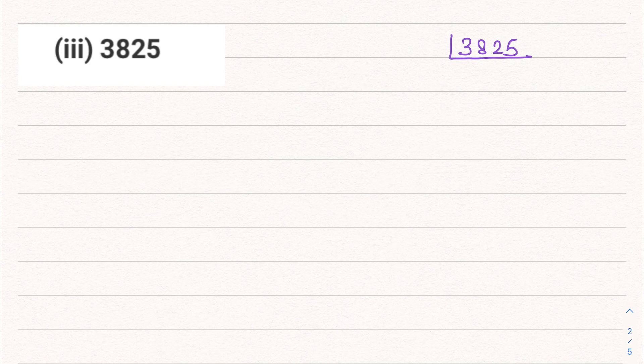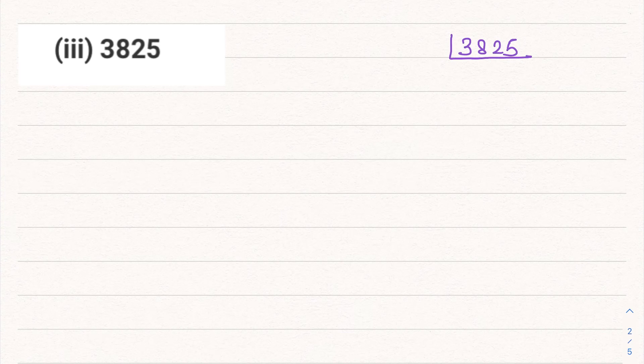Third part is 3825. It's an odd number so 2 won't be a factor, but 5 will be one of the factors. The digit sum is 18, which means it will also come in the table of 3. So let's begin with 3.